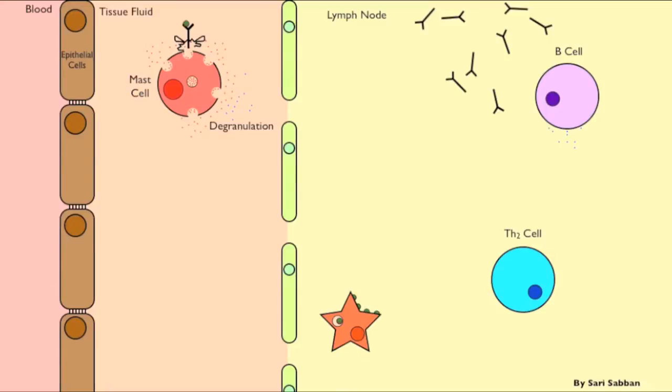Another mediator is interleukin-4, which causes other B cells to produce more IgE antibodies, trapping the sufferer into a vicious cycle.